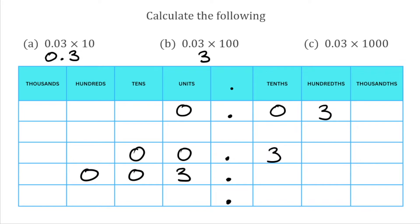Finally, we've got 0.03 multiplied by 1,000, which means we're moving all the digits three places to the left. The 0 that was in the units is now in the thousands, the 0 that was in the tenths is now in the hundreds, and the 3 that was in the hundredths is now in the tens. We've got no units, so we need to put a placeholder zero in there. We've now reached the decimal point, so we can stop. The answer is 30.